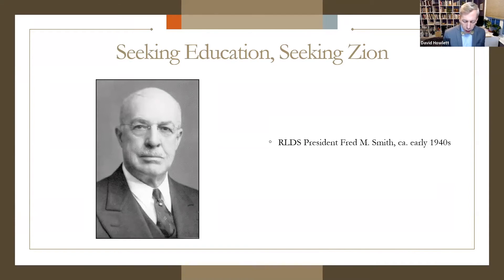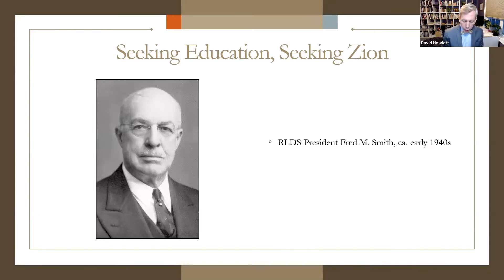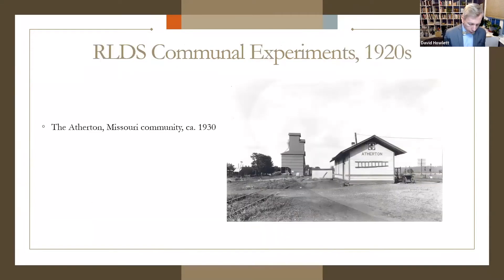Early 20th-century RLDS wholeheartedly pursued intellectual cultivation. FM Smith wrote that one's knowledge of Zion would be enhanced by knowing as much as possible of the humanities and scientific study — anthropology, ethnology, psychology, sociology. FM Smith took this counsel to heart, earning an MA in sociology in 1911 and a PhD in social psychology in 1916. Armed with both a sectarian and proto-ecumenical theology, RLDS members embraced their perceived duty to establish cooperative communities that would usher in the kingdom of God.